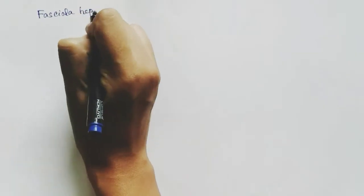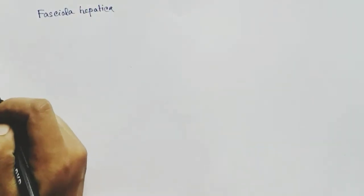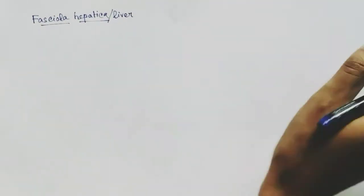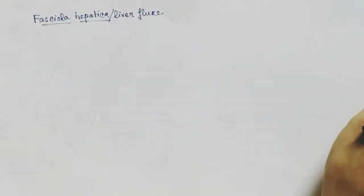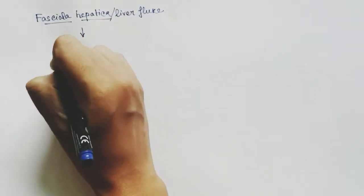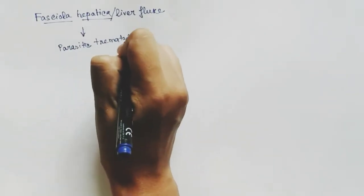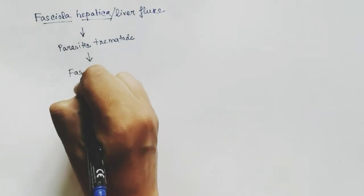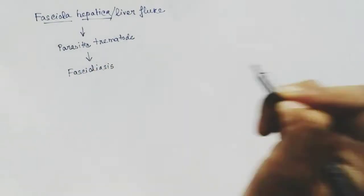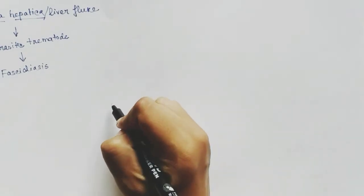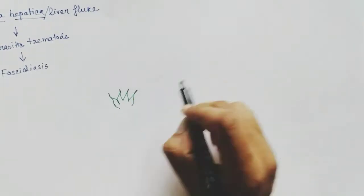In this video we are going to talk about Fasciola hepatica life cycle. Fasciola hepatica is also called liver fluke, as it attacks the liver cells in the body of humans, cattle, cows, sheep, etc. It is a parasitic trematode and it causes fasciolosis.